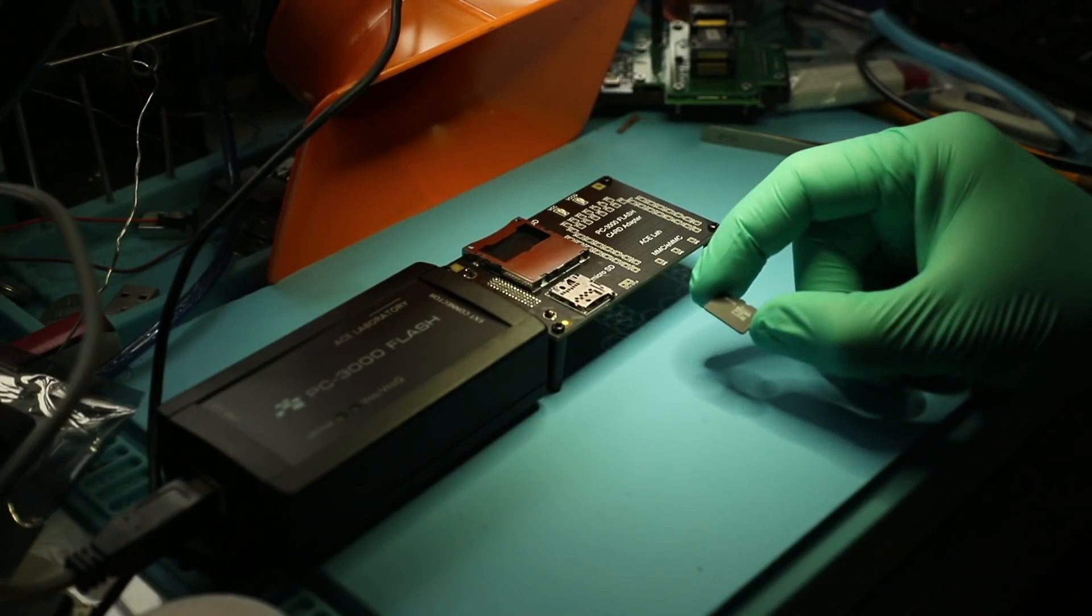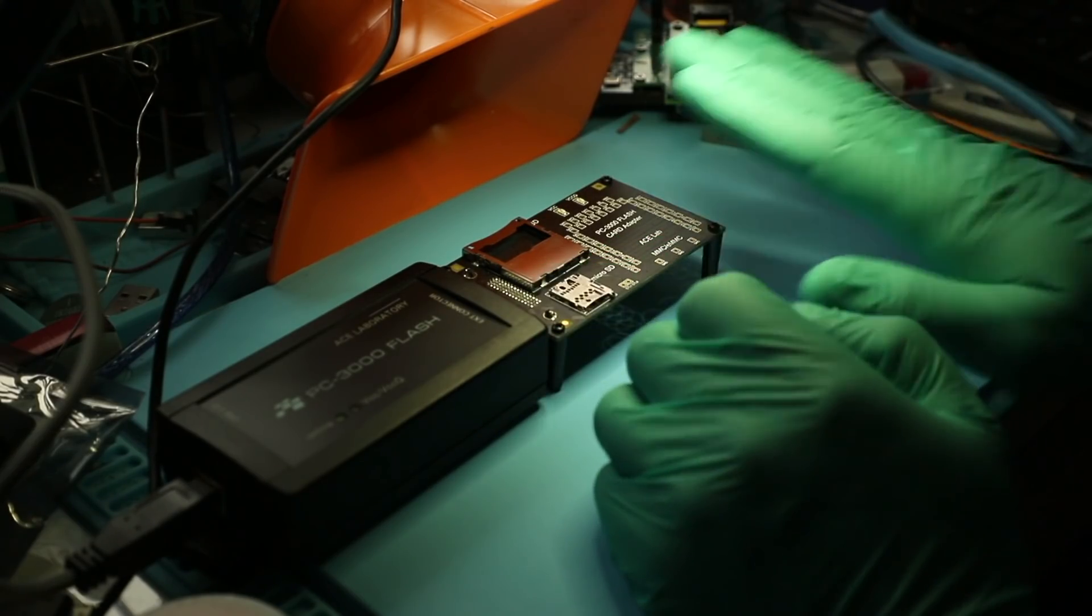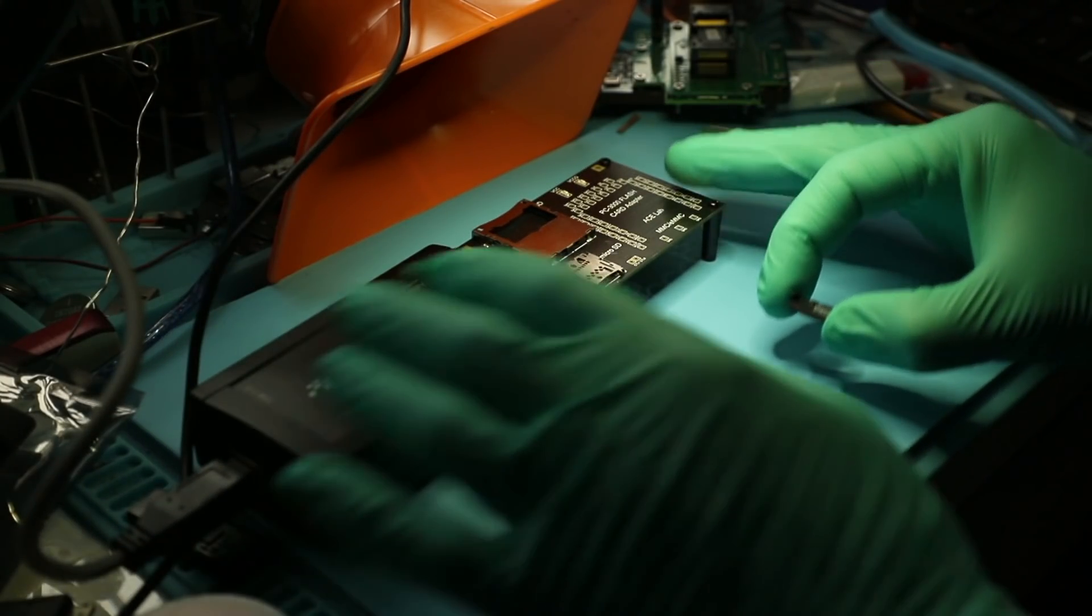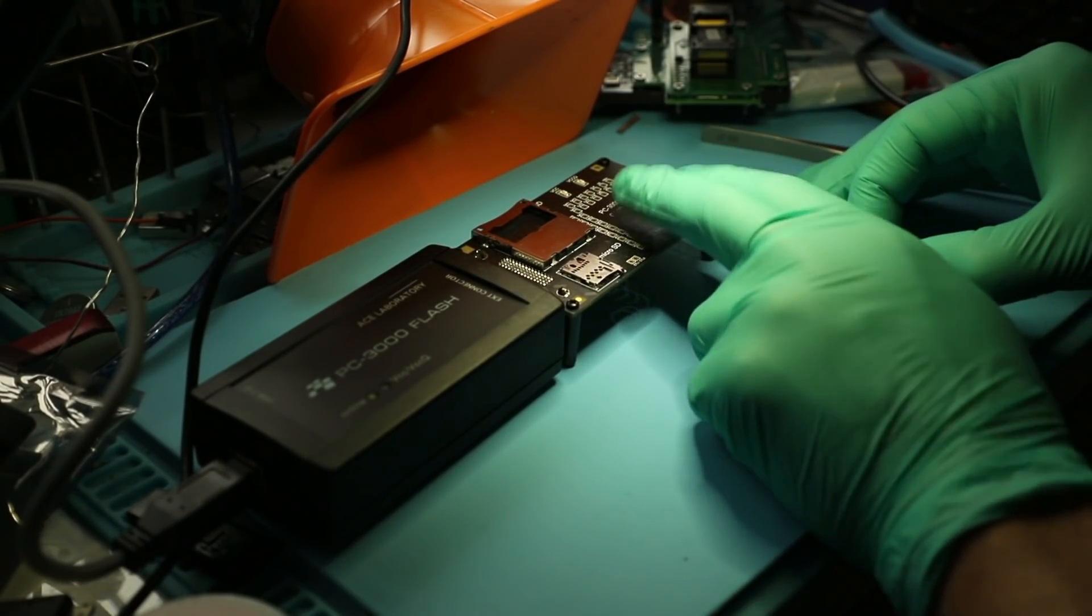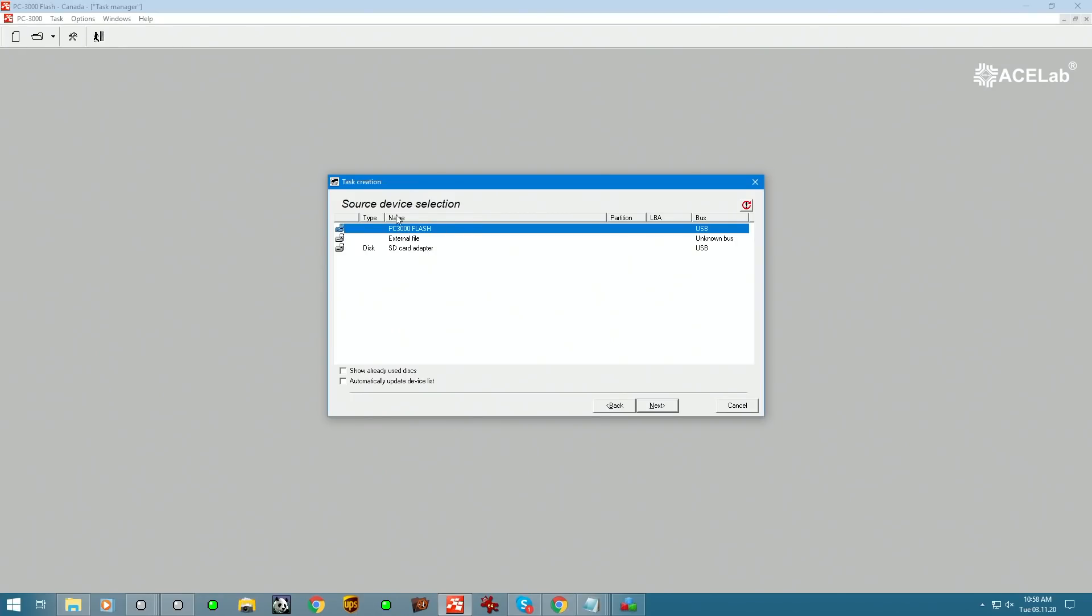For cards that are degrading but not totally dead yet, in other words they accumulate a lot of bad sectors, there's an option to work in technological mode without having to work with NAND protocol. With the help of this adapter, which works slightly different, when it's connected to the box we have a selection of three options for source device: PC 3000 flash would be the box, protocol operations external file if we wanted to work with an image file, and SD card adapter.